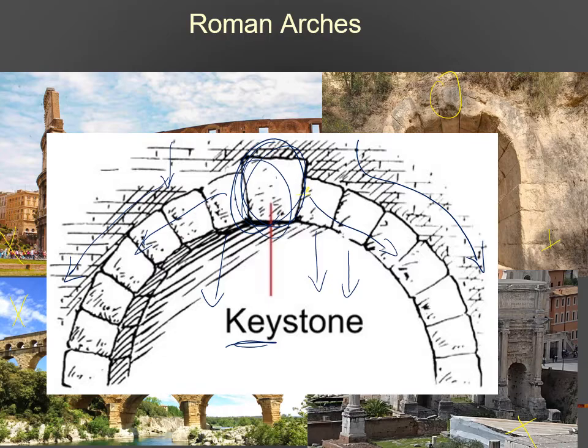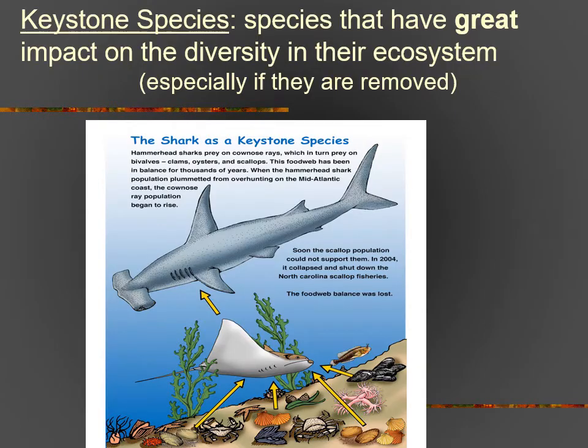That's what Paine thought of when he thought of these starfish — species that hold everything else in the ecosystem in place, preventing it from collapsing upon itself if they were ever removed. He coined the term keystone species: species that have a great impact on biodiversity in their ecosystem, especially if they are removed for some reason — if they go extinct or are hunted out. He first found this in predator populations.